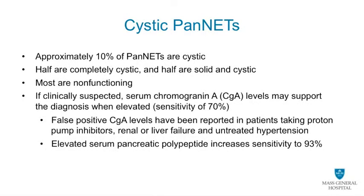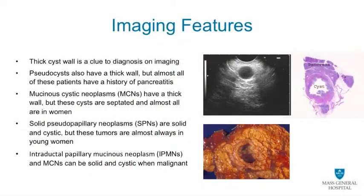Approximately 10% of neuroendocrine tumors of the pancreas are cystic in nature. Half are completely cystic, mimicking a primary mucinous cyst, and the other half are solid and cystic, mimicking other primary tumors of the pancreas. Most are non-functioning. If clinically suspected, serum chromogranin levels can be obtained to support the clinical impression, though sensitivity is only 70%. Adding serum pancreatic polypeptide to chromogranin A levels can increase sensitivity to 93%. A thick cyst wall is a clue on imaging, but there is too much overlap with other pancreatic entities to be independently diagnostic, therefore requiring tissue diagnosis.